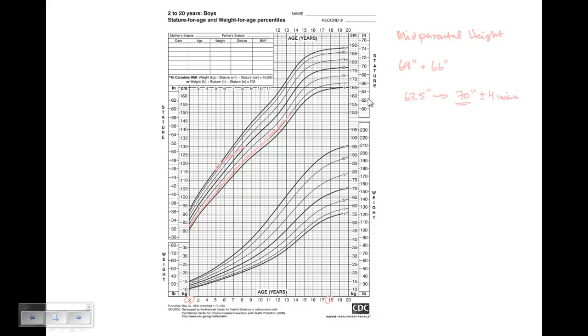Now if this were your daughter, we would take the 67 and a half inches and subtract 2 and a half inches. She gets 65, 5'5", exactly, plus or minus four inches. So that's something we do. We then calculate, in fact let's plot that right on the curve.